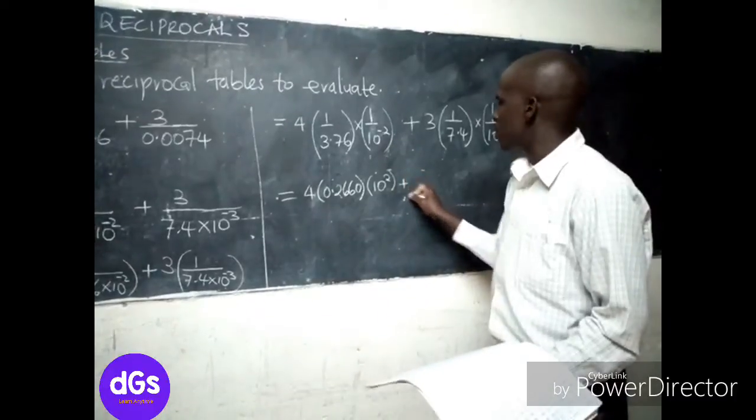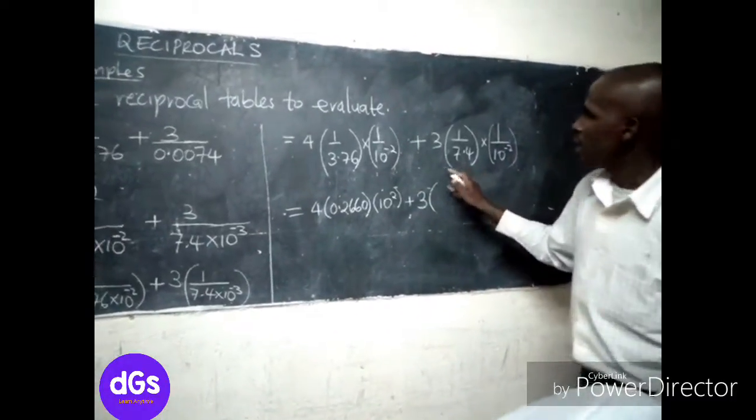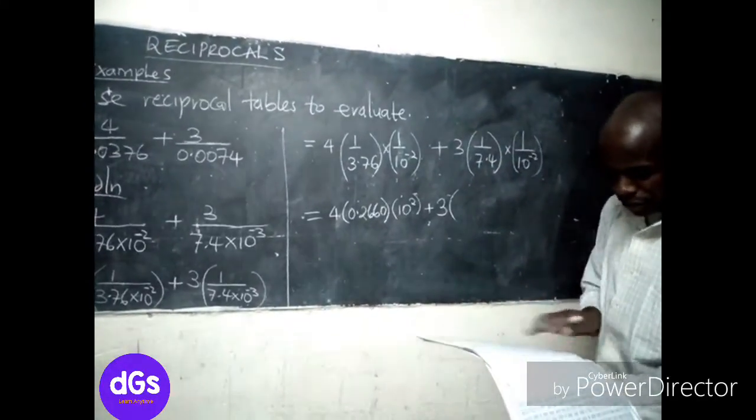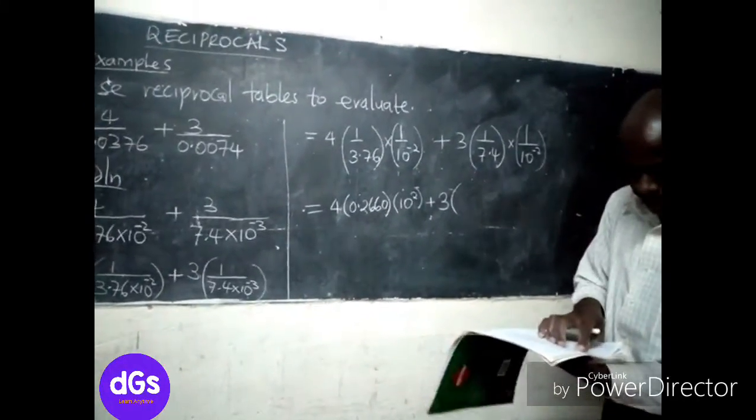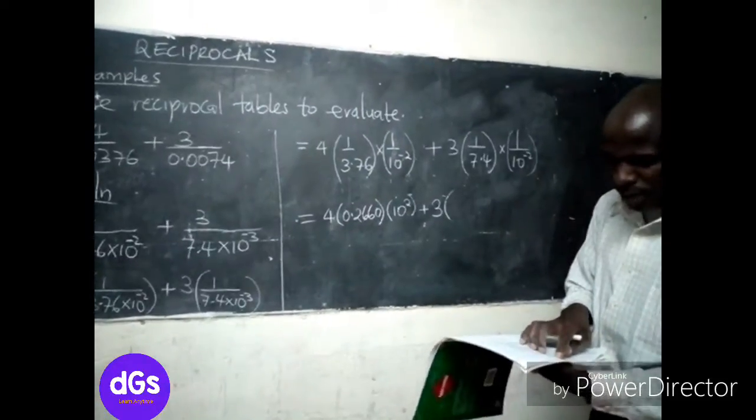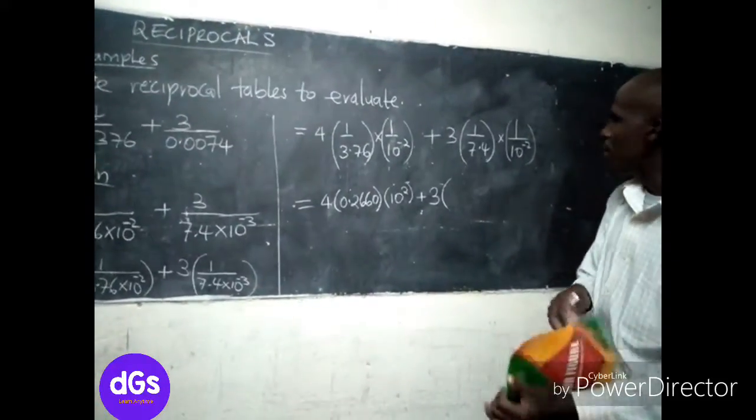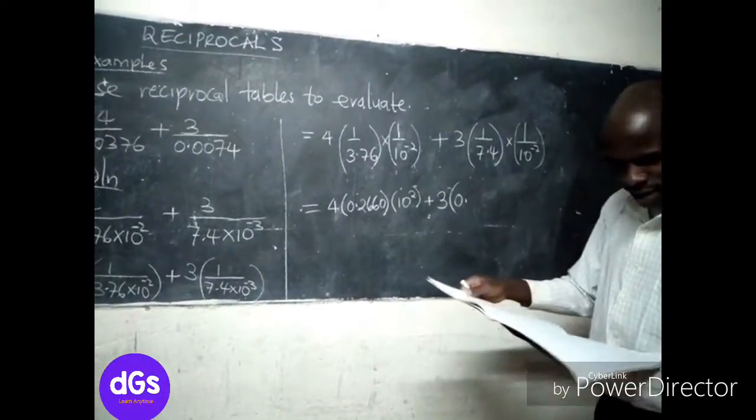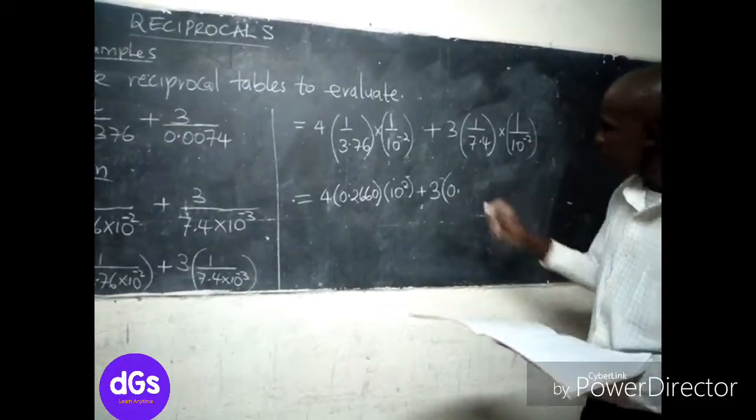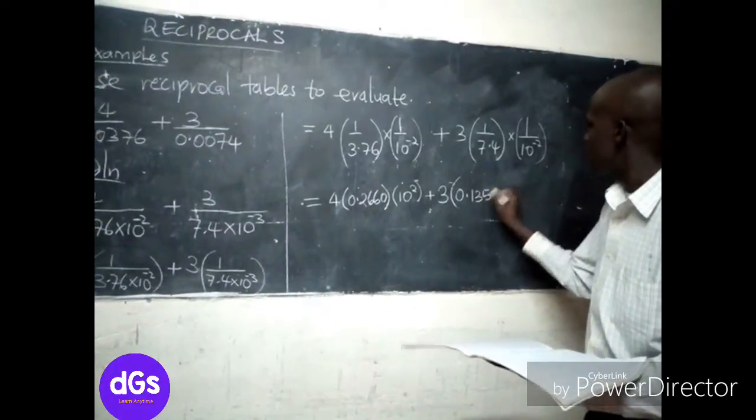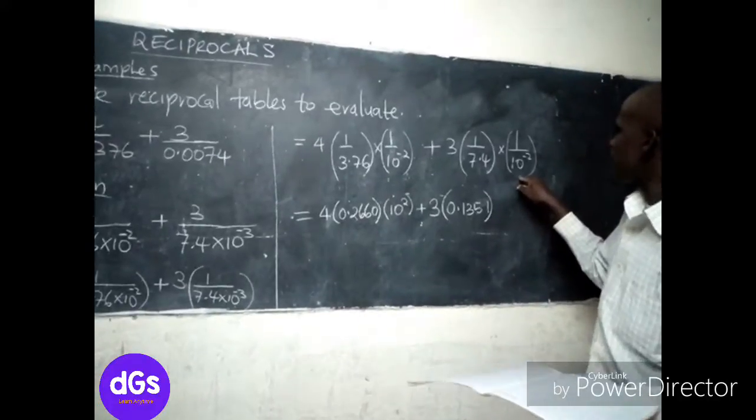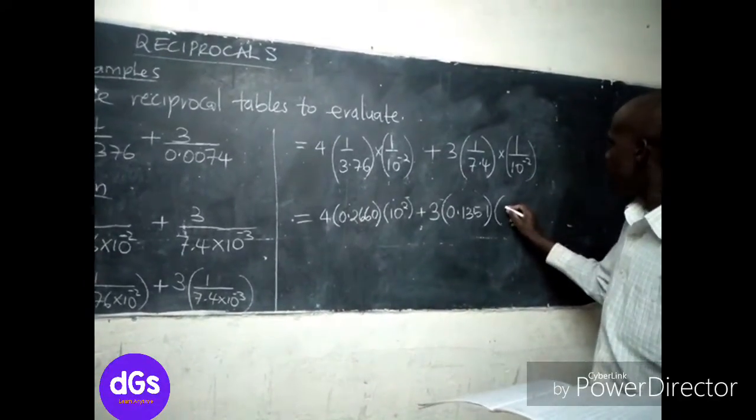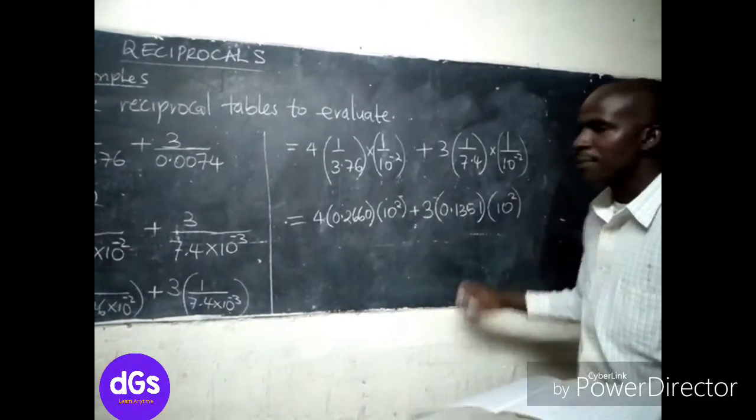Then plus 3 into the reciprocal of 7.4, which is simply 0.1351. Then we're going to multiply this one and we have 10 power 3.